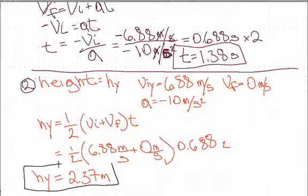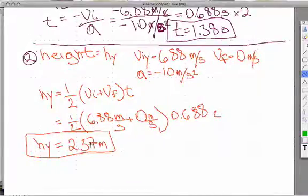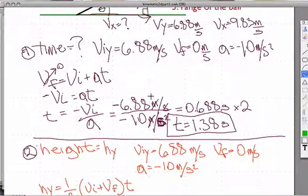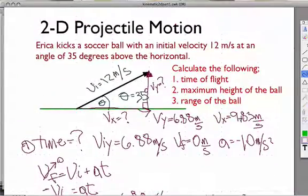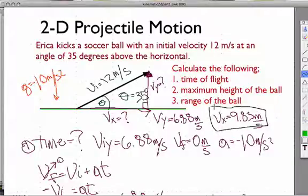So we now know the time is 1.38 seconds and the height is 2.37 meters. Scrolling back up, recall that the initial velocity in the x direction is 9.83 meters per second, and the only acceleration acting on the ball is gravity in the y direction — minus 10 meters per second squared. There is nothing acting on the ball in the x direction, disregarding air resistance and friction.